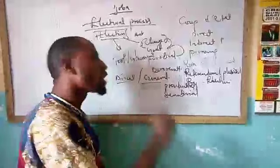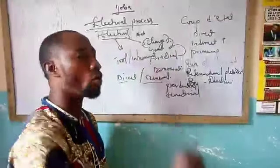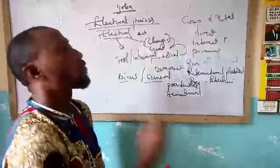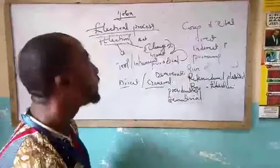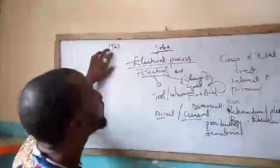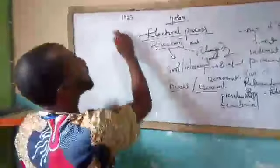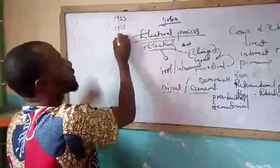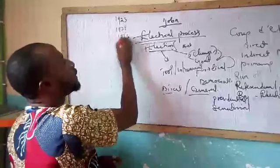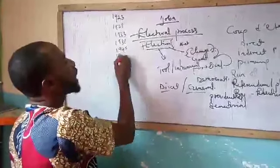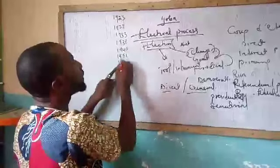All of these are examples of direct or general election. Nigeria as a country has conducted a series of general elections throughout its history, starting from 1923 — that was the first year Nigeria conducted a general election. Then 1928, 1933, 1938, 1945, 1951, and 1959.